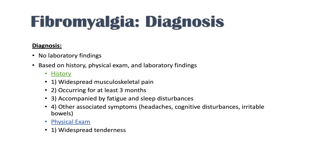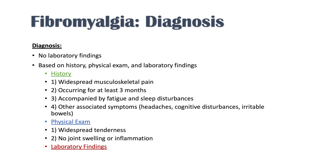On physical examination, we find widespread tenderness in the same areas discussed, but no signs of joint swelling or inflammation — essentially patients look fine except for that widespread tenderness on palpation. On laboratory examination, we find nothing abnormal: normal CBC, normal erythrocyte sedimentation rate, and normal CRP or C-reactive protein. Markers of inflammation are normal. So diagnosis is made through history, physical examination, and normal laboratory findings.